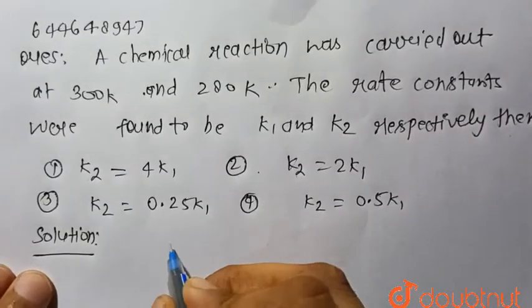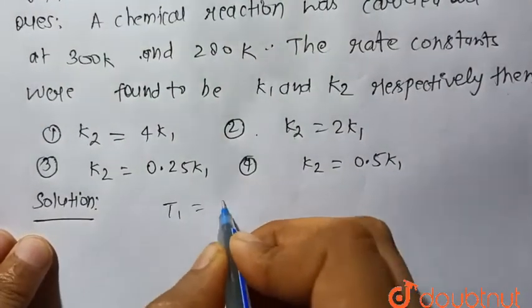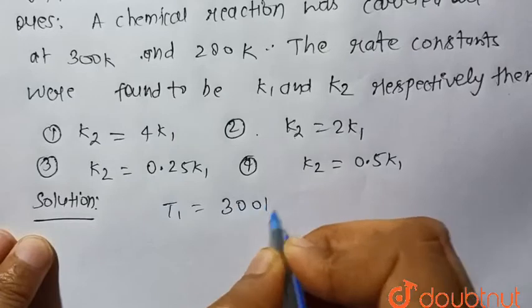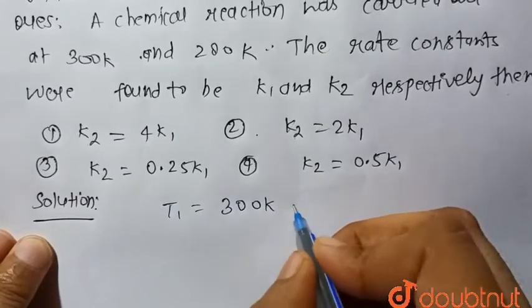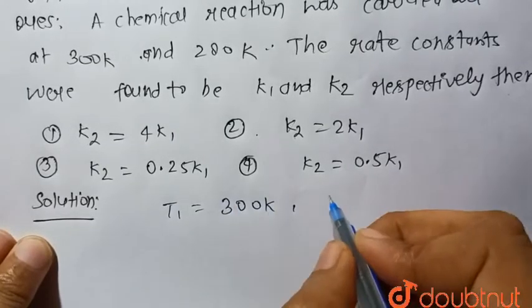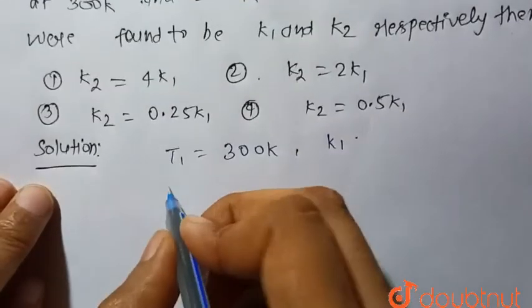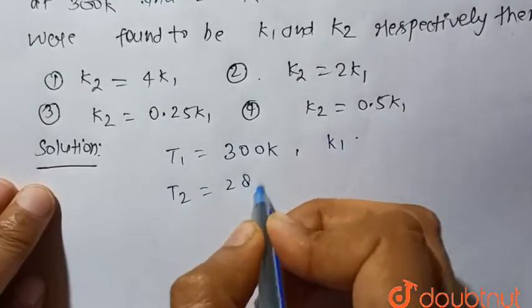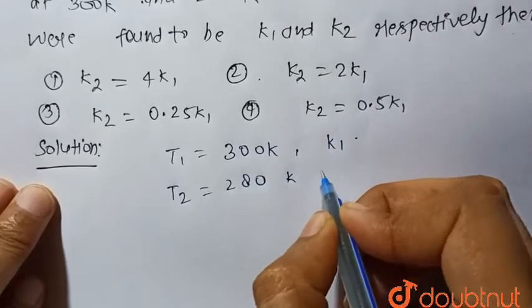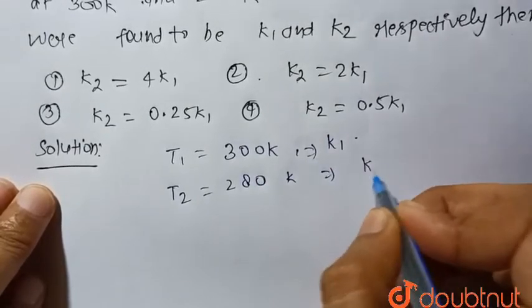So let's say T1 is equal to 300 kelvin and the rate constant at temperature T1 is k1. And T2 is equal to 280 kelvin and the rate constant at T2 is k2.